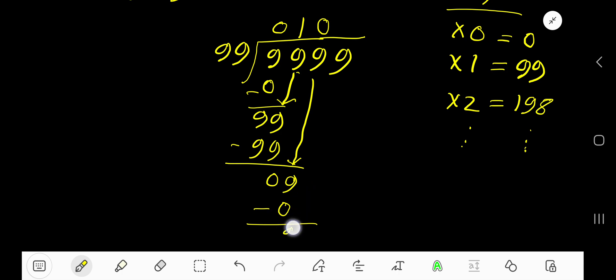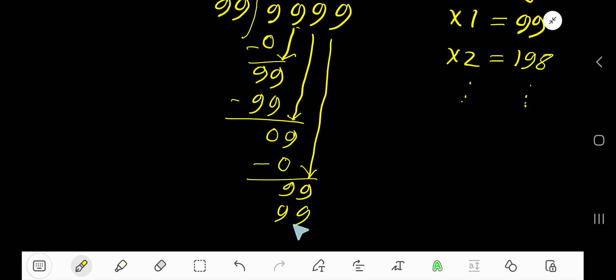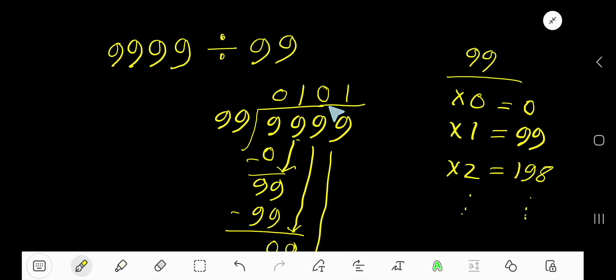You get 9. Bring down the next 9. 99 goes into 99 how many times? One time. Write 1. 1 times 99 is 99. Subtract and your remainder is 0, so we are done.